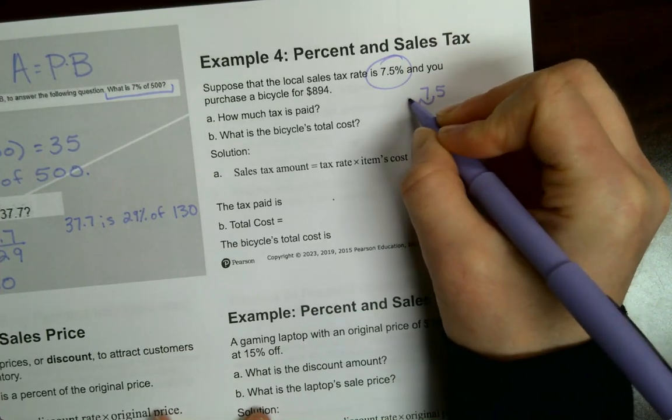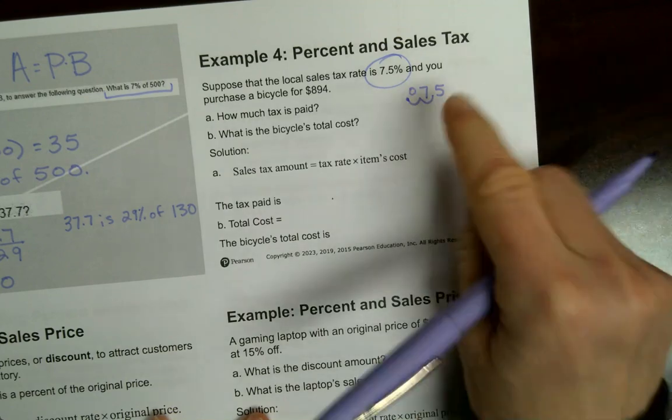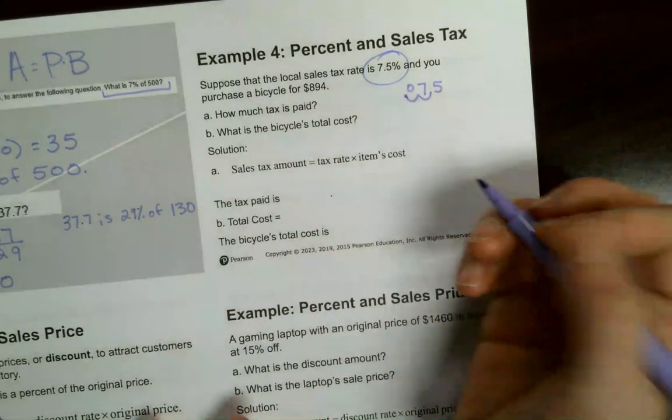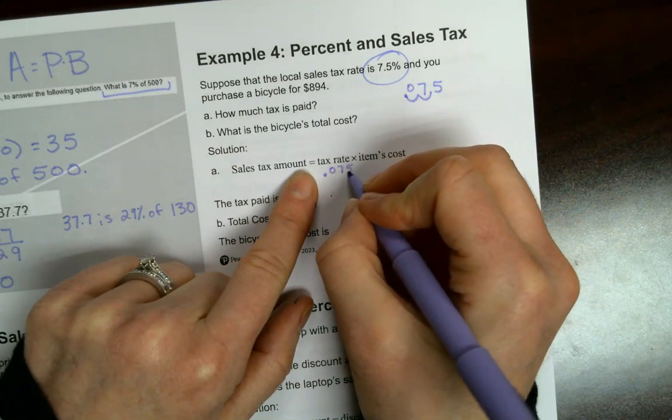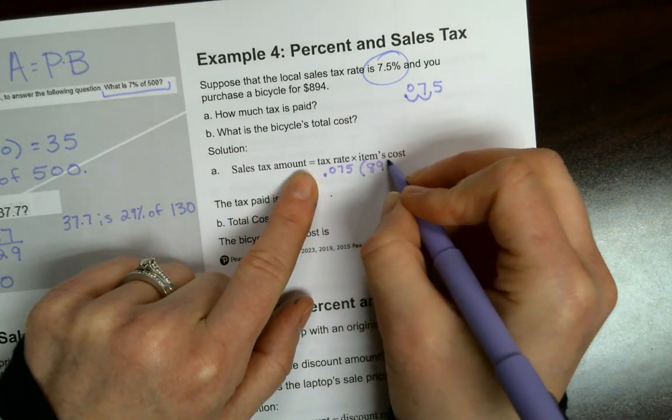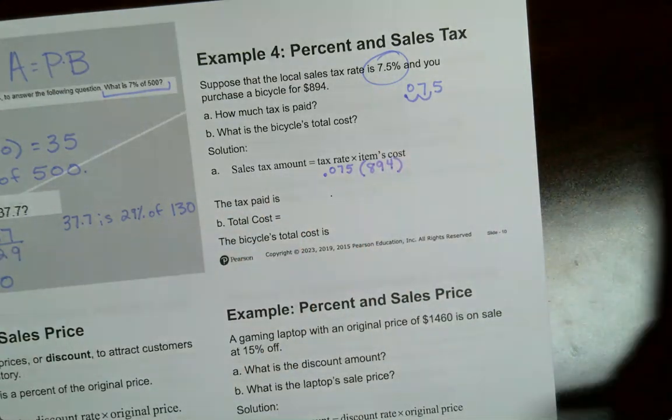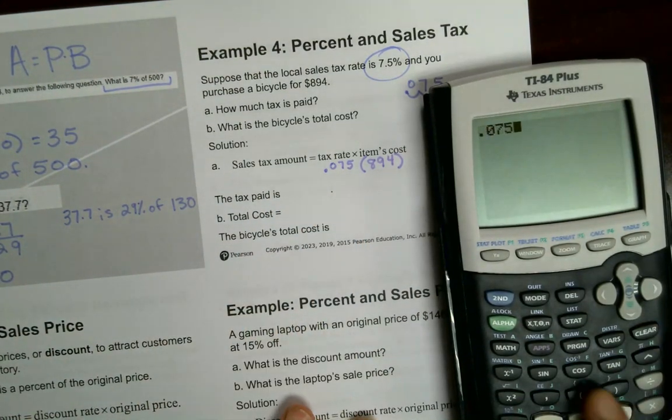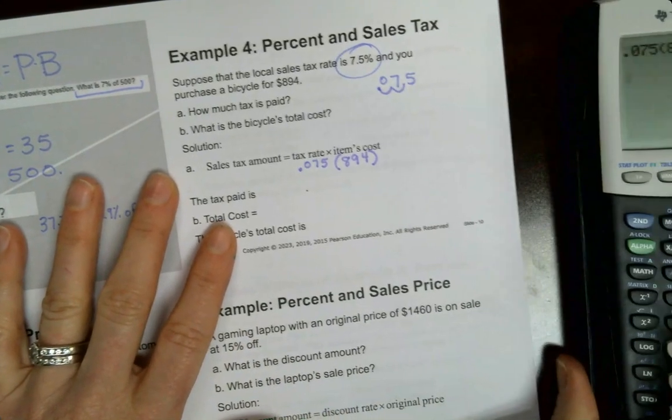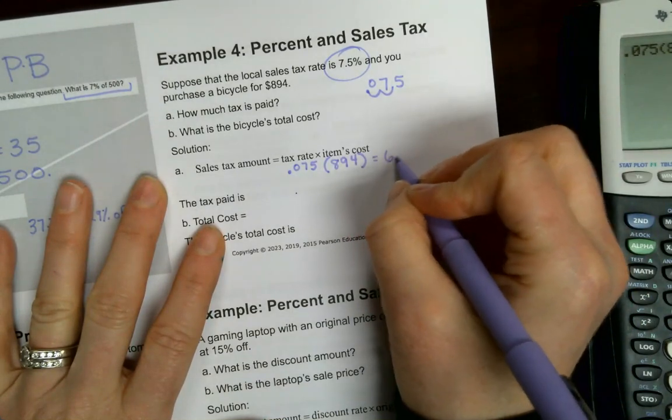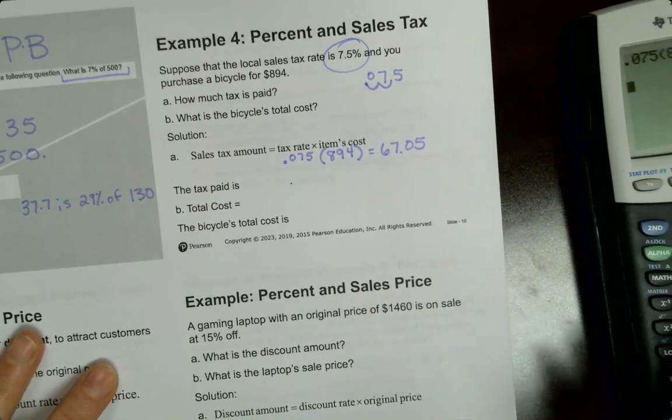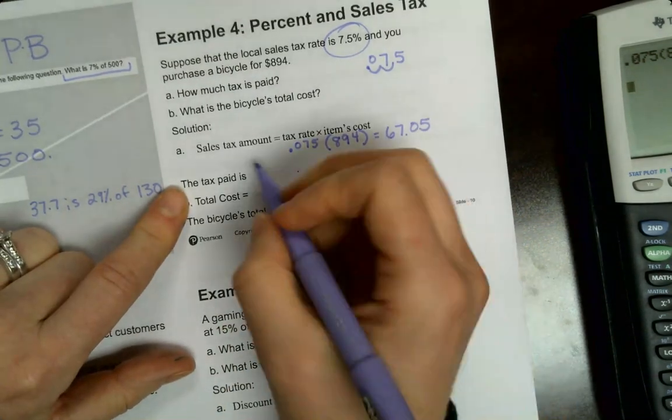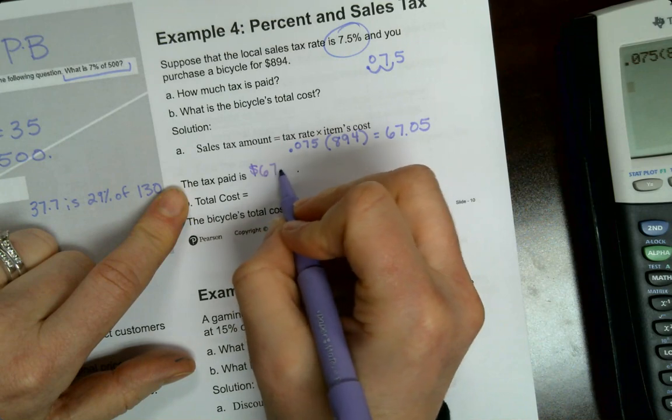So I'm going to go ahead and convert this. 1, 2, and there's not anything there. We're going to put a zero. We're going to multiply that times our item's price. So it says sales tax amount equals tax rate 0.075 times the item's cost. 6705. That is our taxes that will go to the government. So the tax paid is 6705.